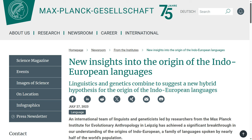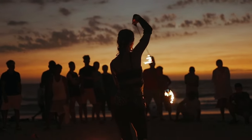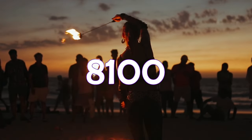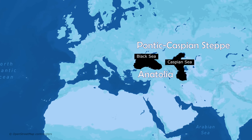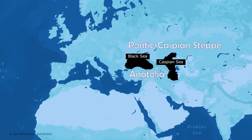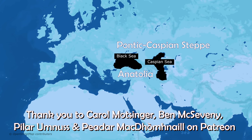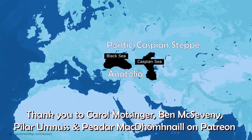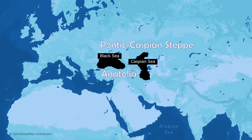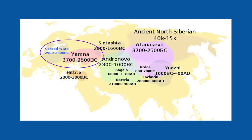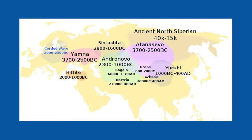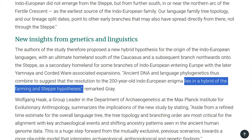A new study from the Max Planck Institute for Evolutionary Anthropology in Leipzig, Germany, looked at these theories and tried to date the age of the Indo-European language family. The study estimated it was approximately 8,100 years old, with 5 main branches already split off by around 7,000 years ago. The results were not entirely consistent with either the steppe or farming hypotheses, so the authors proposed a new hybrid hypothesis — with an ultimate homeland south of the Caucasus and a subsequent branch northwards onto the steppe as a secondary homeland, with the later Yamnaya and Corded Ware associated expansions. 'Ancient DNA and language phylogenetics thus combine to suggest that the resolution to the 200-year-old Indo-European enigma lies in the hybrid of the farming and steppe hypotheses,' remarked one author.